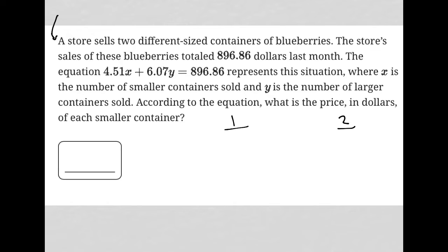The equation 4.51x plus 6.07y equals $896.86 represents this situation. Now, I can tell from the structure of this equation some things that are actually very important to know. I know that this solution over here is a dollar amount, right? So it was just provided up here. It's not just a number, it's an actual dollar amount, which means units-wise, these have to also be dollar amounts.